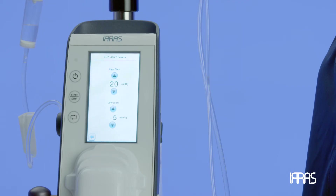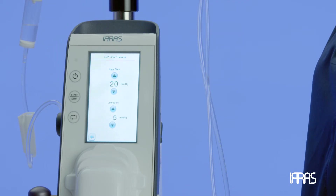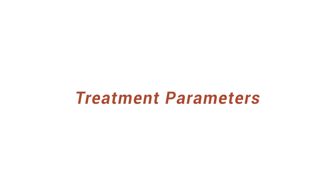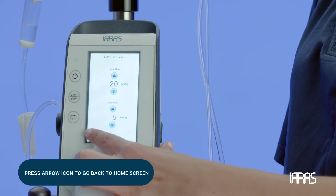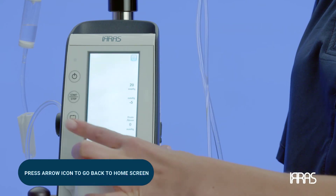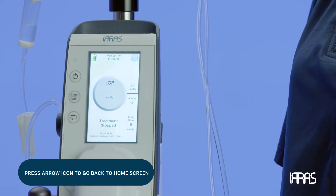The purpose of this feature is to ensure the treatment is taking place within the pre-specified parameters. And if it's not, the control unit will adjust treatment to adapt to the clinical situation. Once the high and low values are set, press the arrow icon to go back to the home screen.